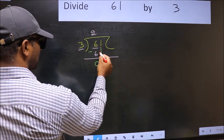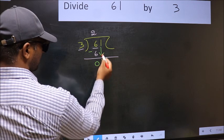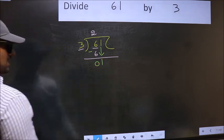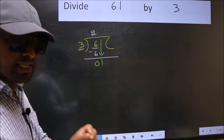After this, you should bring down the beside number. That is 1 down. After this step, the mistake happens.